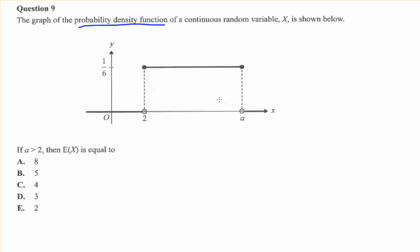We could set up an integral but we can recognize that this is a rectangle and we can find the area that way. So the length of our rectangle is A minus 2 because we know that A is bigger than 2, and the height of our rectangle is 1 sixth, and we know that that must equal 1, which means that A minus 2 equals 6 and A equals 8.